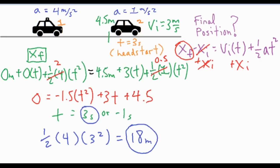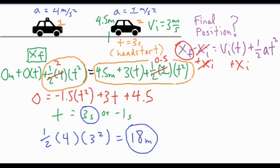To find the final position, plug t = 3 into either formula. Using the police car's simpler expression — ½·a·t² — with acceleration = 4 (as used in this formula): ½ × 4 × 3² = 2 × 9 = 18 meters. That is the final answer.